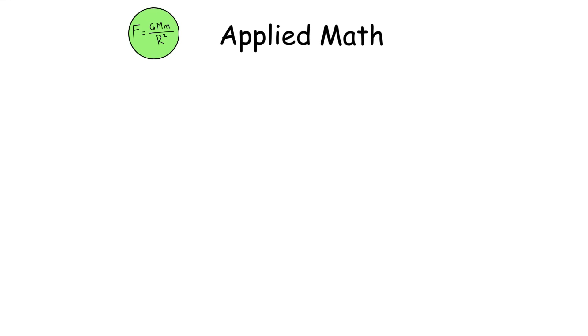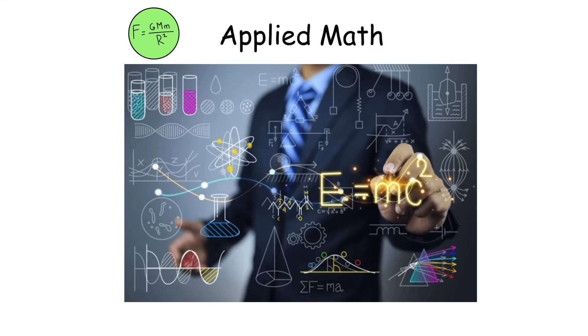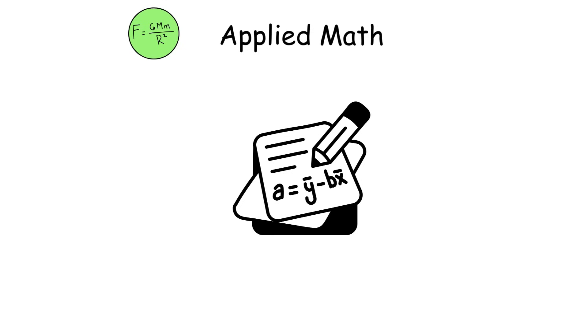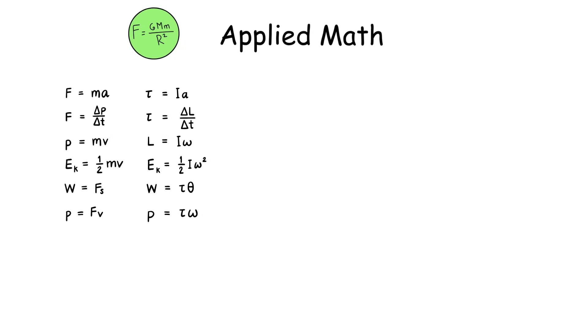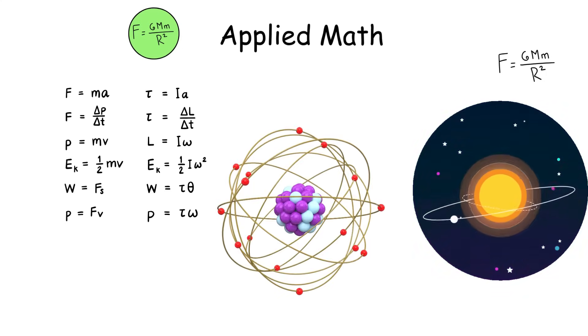Applied mathematics. Applied mathematics solves real-world problems, drawing from all branches. Numerical analysis develops algorithms for approximate solutions, like simulating weather. Mathematical physics models natural phenomena, from planetary orbits to quantum systems. Operations research optimizes processes, like supply chains.